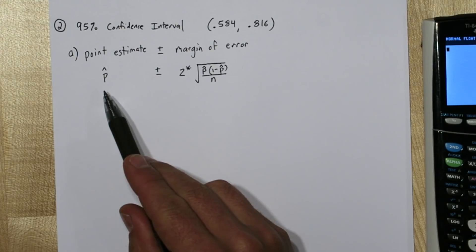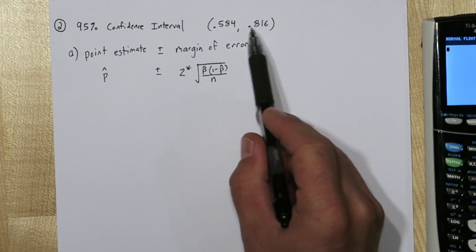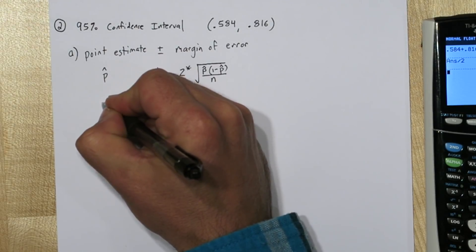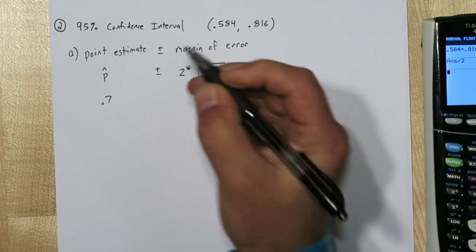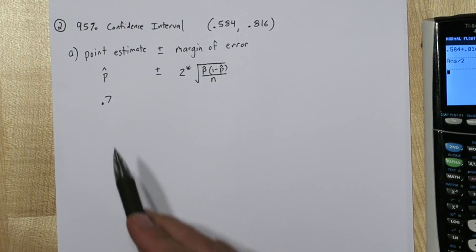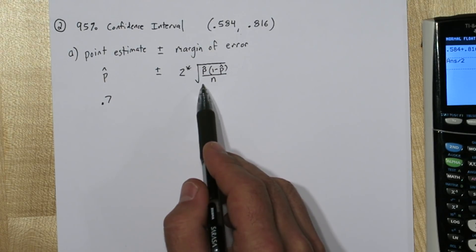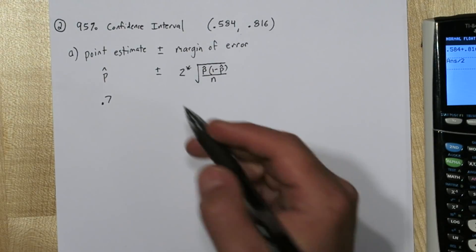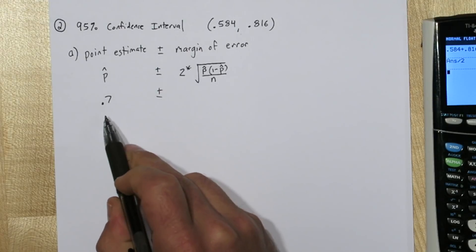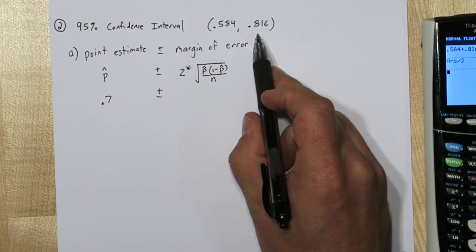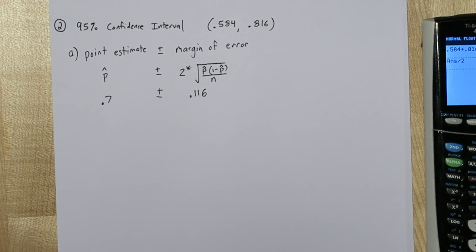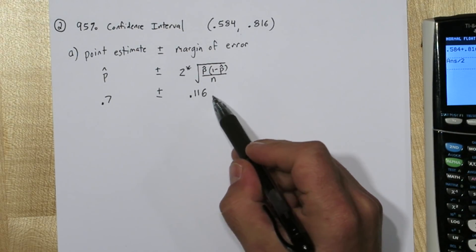So we need to figure out what p-hat is. Now p-hat is going to be the very middle of this interval. So we can find the middle by adding the two values and dividing by 2, so p-hat is 0.7. If you take 0.7 and add and subtract a margin of error you end up with this interval. So from 0.7 to 0.816 is 0.116. So now we know the margin of error is 0.116.